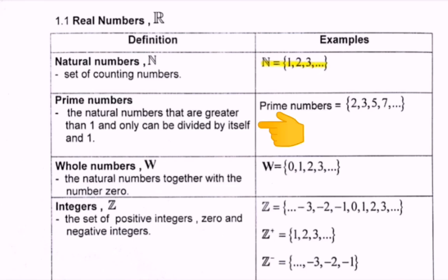Next we have the prime number. The definition is the natural numbers, which is the counting numbers, that are greater than 1, and N can only be divided by itself and 1. So here we have the example of prime numbers: 2, 3, 5, 7, and so on.